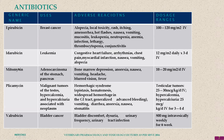Other antineoplastic antibiotics include idarubicin, mitomycin, and plicamycin, which is used in malignant tumors of the testes. Valrubicin is used for bladder cancer, detected in elderly persons; the route of administration is intravesically, infused directly inside the bladder.